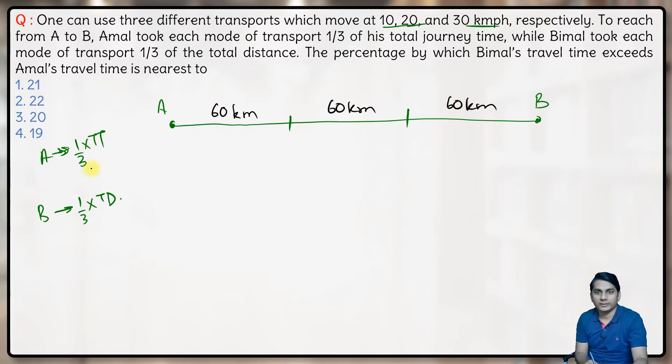Now what will be the average speed of Amal? We know when time traveled is the same at different speeds, the average speed is the simple average of the speeds. So 10, 20, 30 - the simple average will be 20.